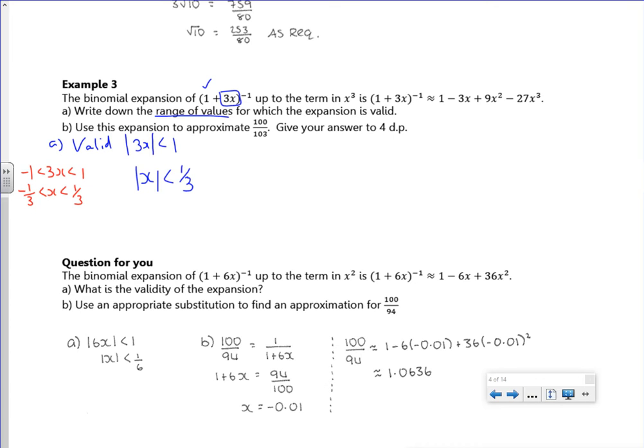So let's just say use the expansion to approximate 100 over 103. Okay, so how are we going to do that now? I need to find out what x value I can use. So for part b, I need to find an x value there.